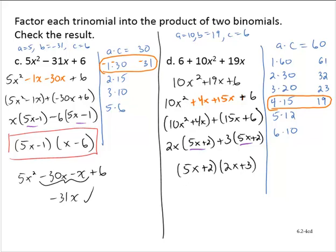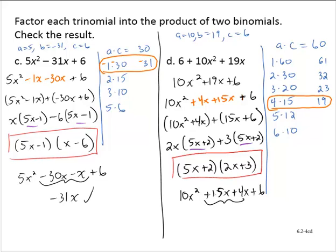Let's check our work. 5x times 2x is 10x squared. Outers: 5x times 3 is 15x. Inners: 2 times 2x is 4x. Last: 2 times 3 is 6. The first and last terms work — 10x squared and 6. Checking the middle terms: 15x plus 4x is 19x, and that checks out.